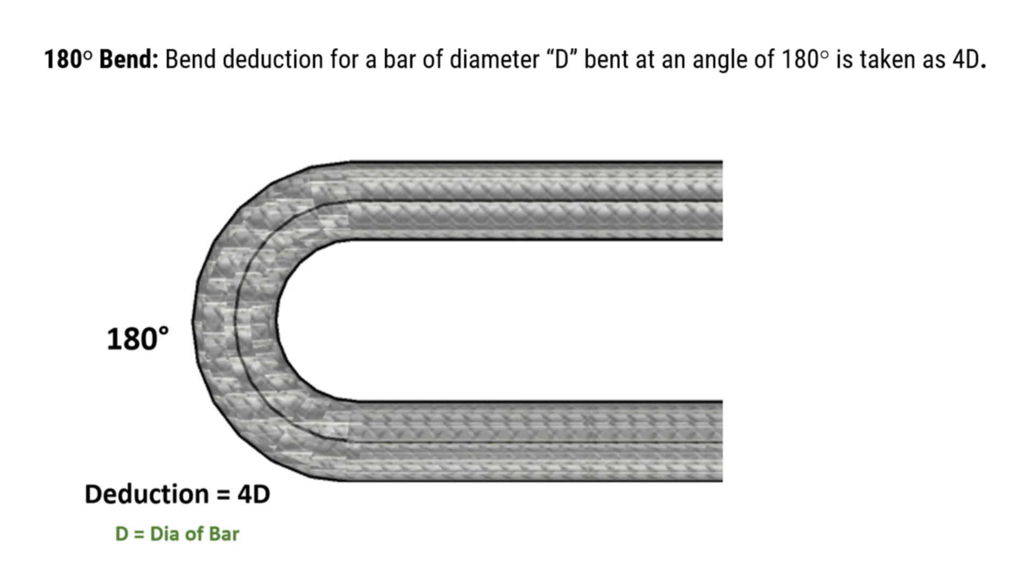Bend reduction for a bar bent at an angle of 180 degrees is taken as 4 times the diameter of the bar.